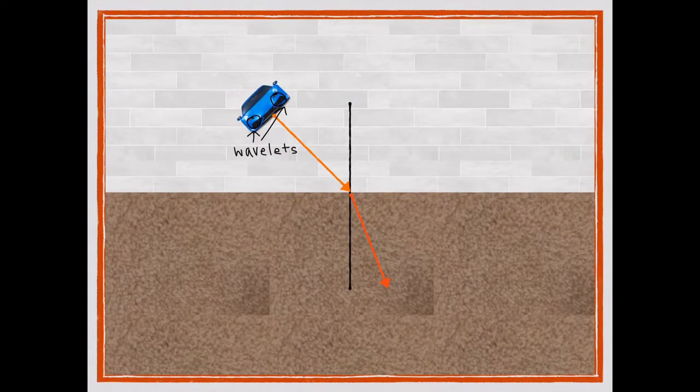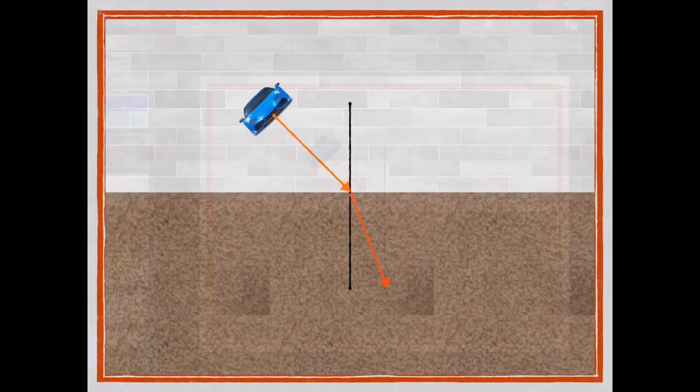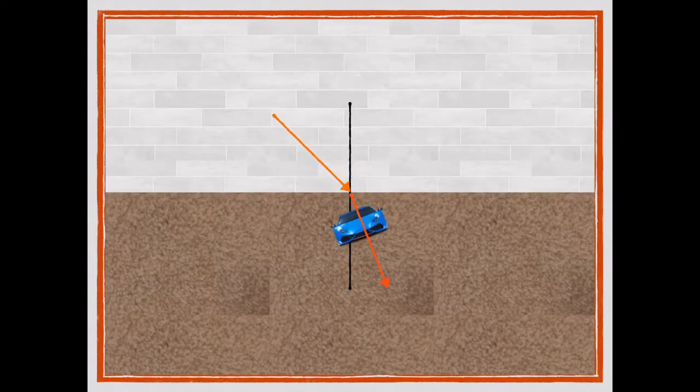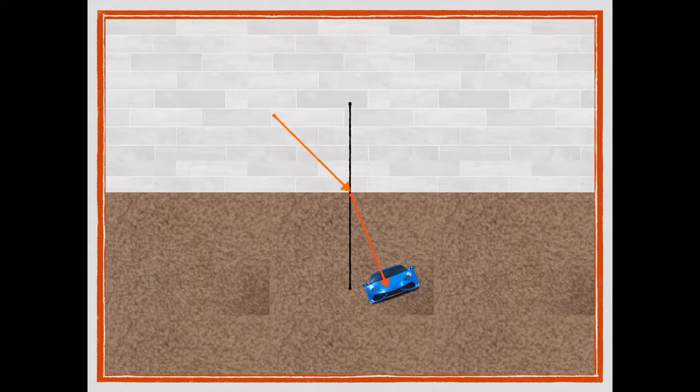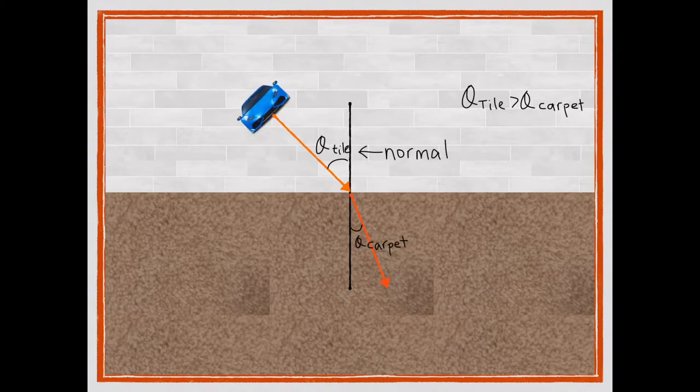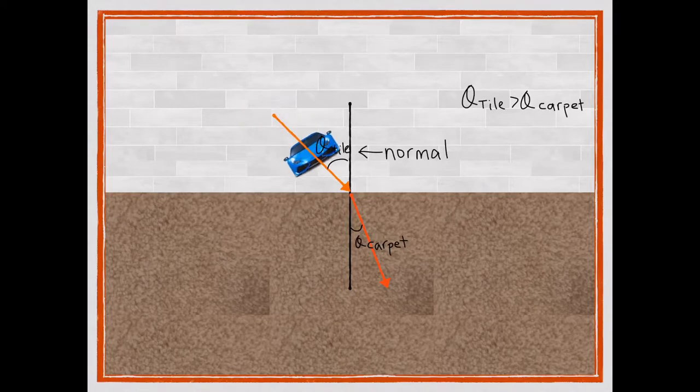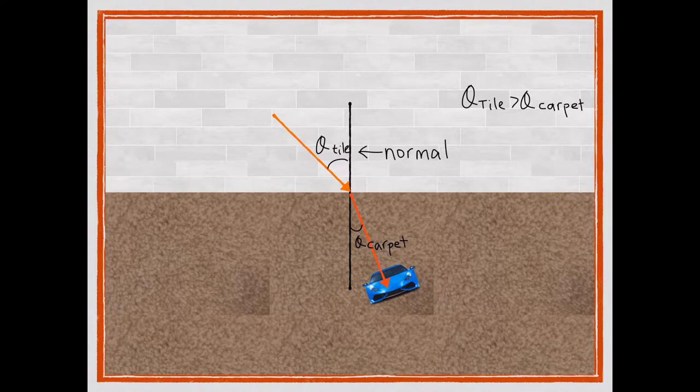If this is hard to visualize, imagine the wavefronts as a toy car, and the wavelets being the individual wheels. If you imagine pushing this toy car at an angle from tile, which has a lower refractive index, to carpet, which has a higher refractive index, you would see the car refract. As the wheel on the left would hit the carpet first, it would slow down, while the wheel on the right is still going fast on the tiles. This momentary difference in speed between the two wheels causes the car to bend inwards, towards the normal. Now, of course, refraction isn't as simple as this analogy, as there are much more than two wavefronts interacting at the same time.